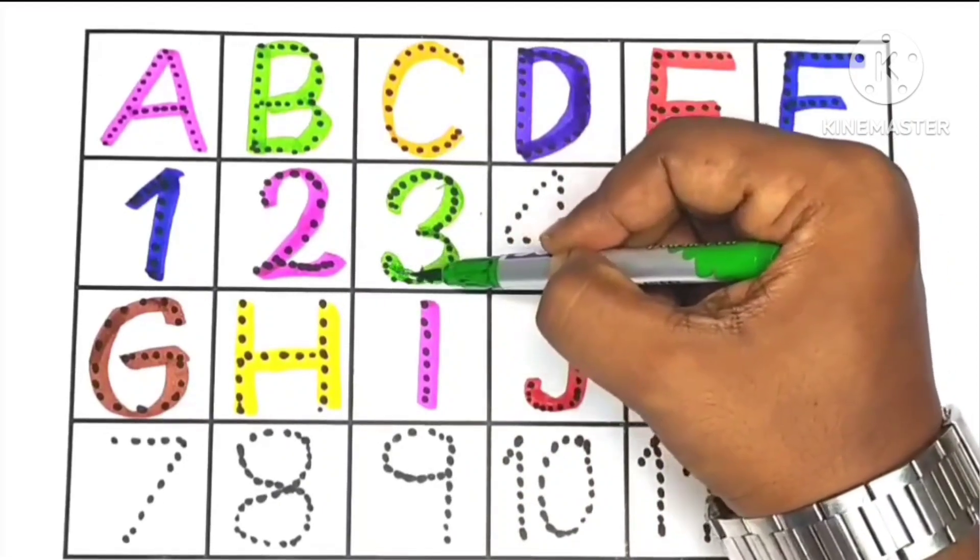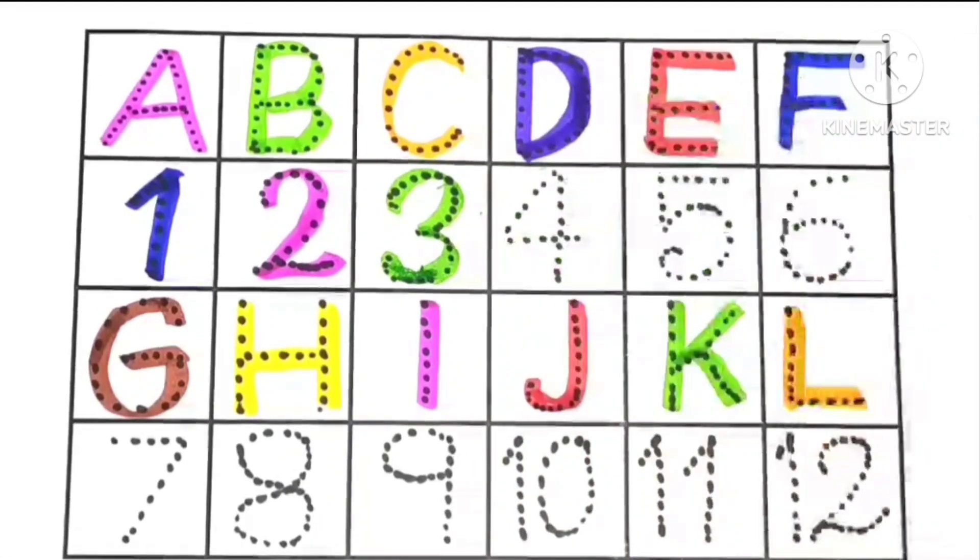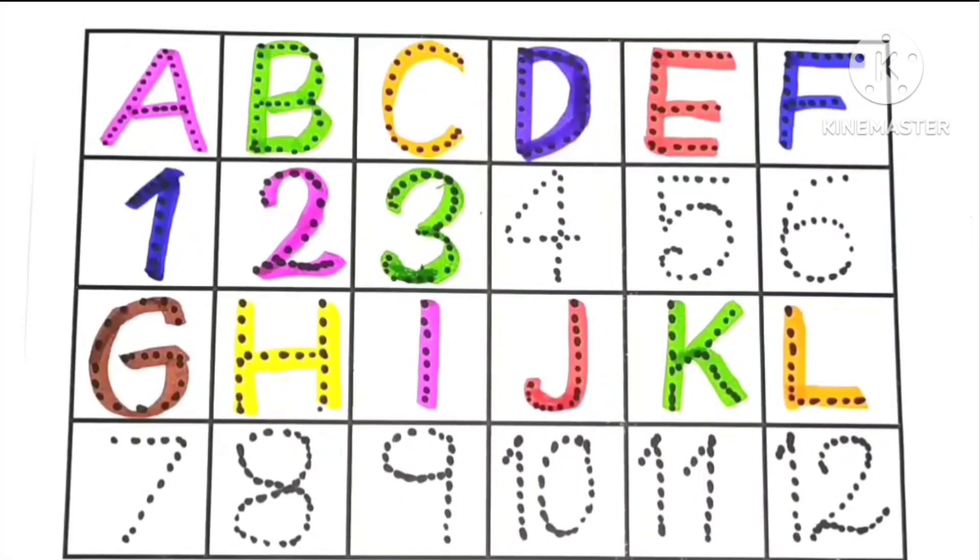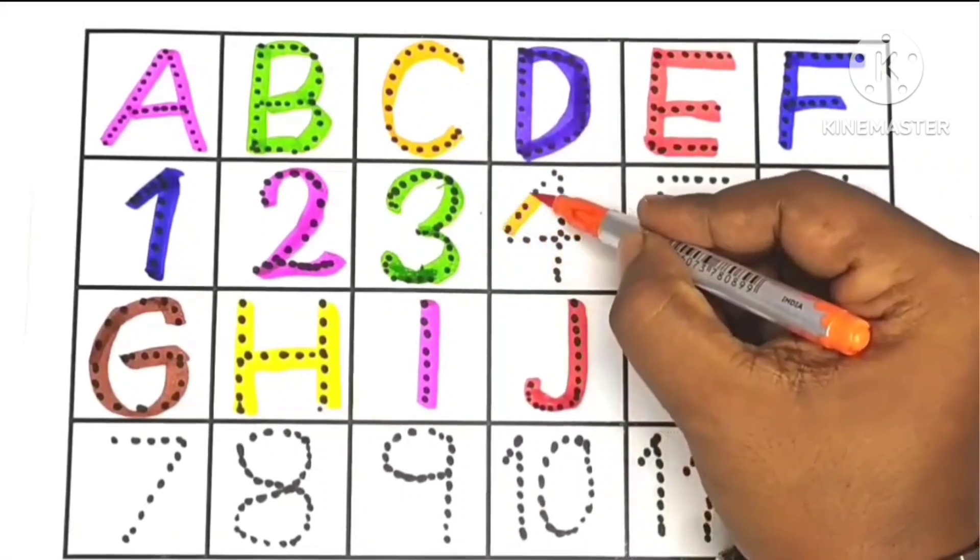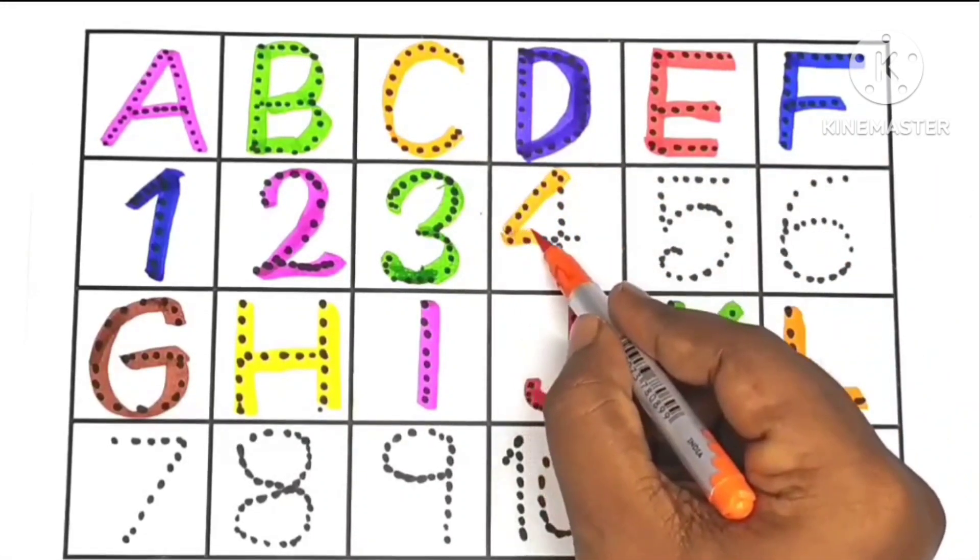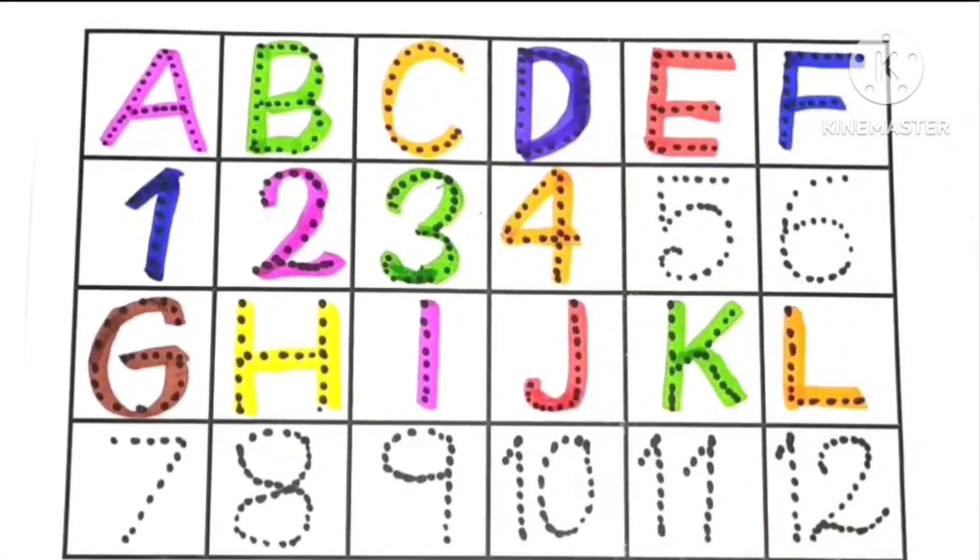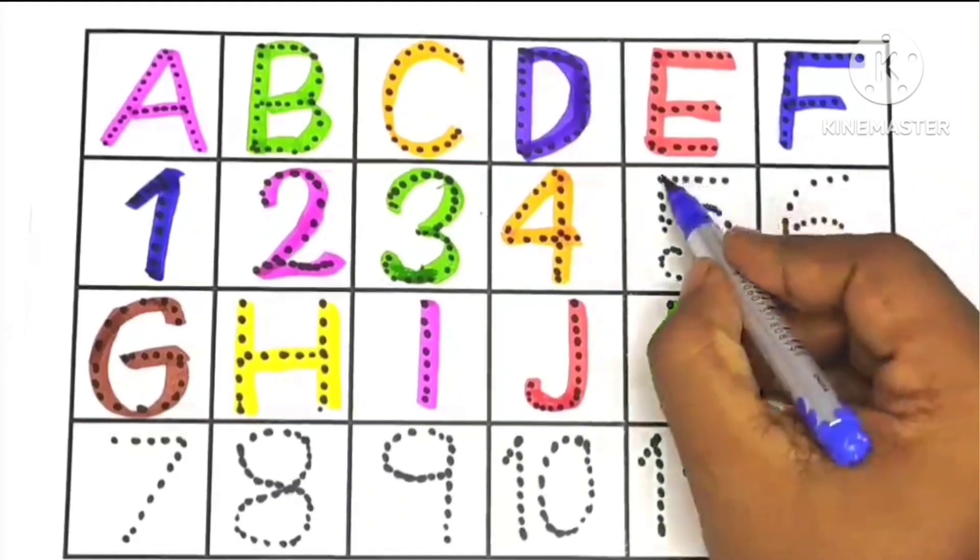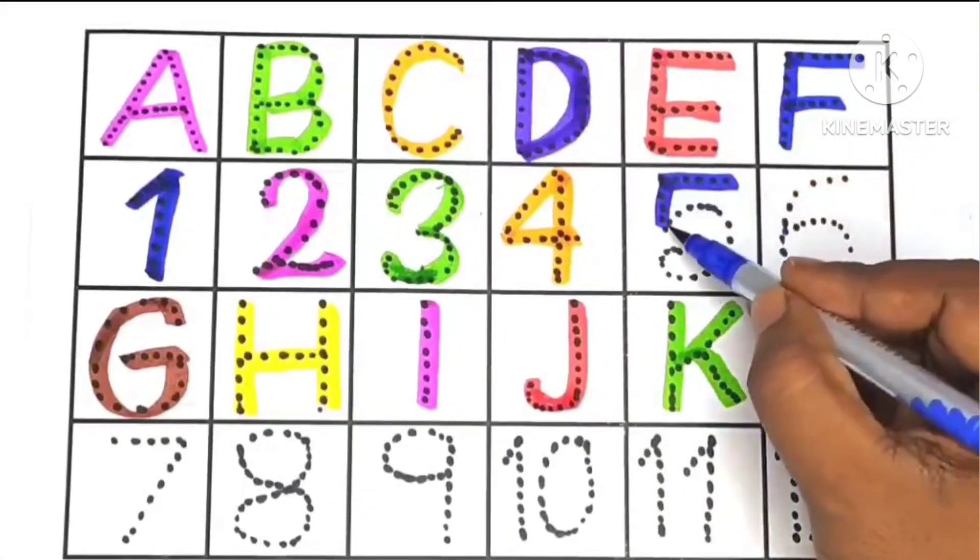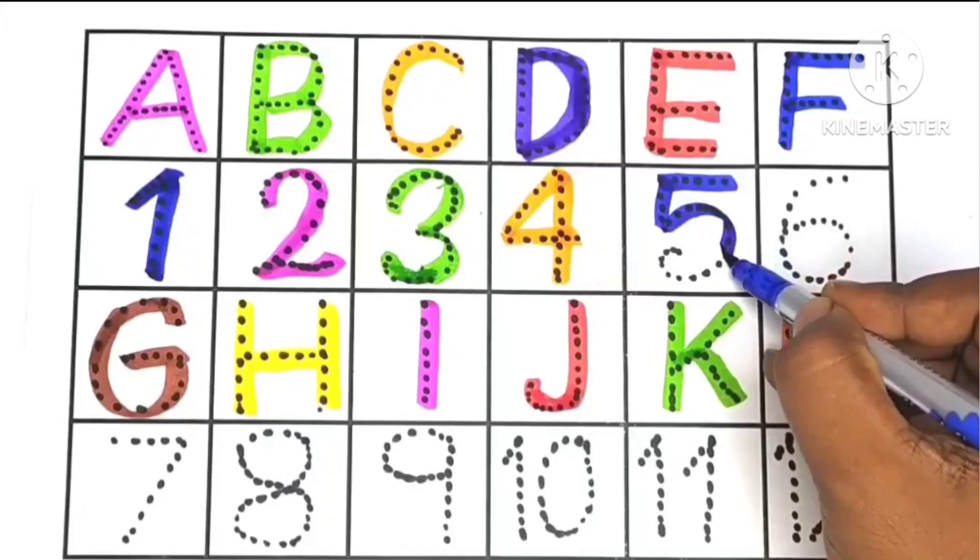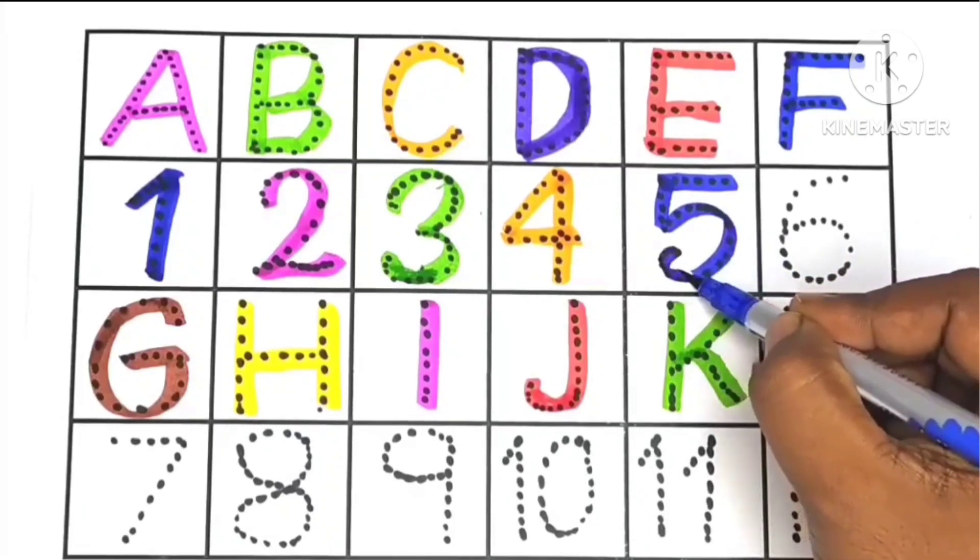2 ke baad 3, 3, it comes 4. F-O-U-R, 4, 4, 4. 5, F-I-V-E, 5.